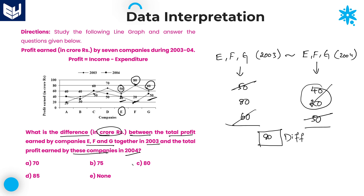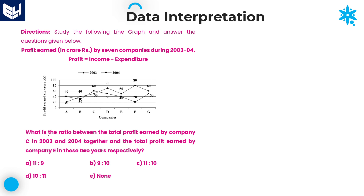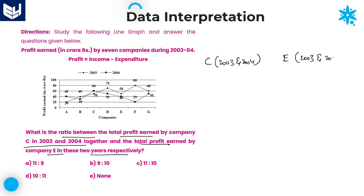Option C is the right answer for the second question. Now the third question: we need to calculate the ratio between the total profit earned by Company C in both 2003 and 2004 together, and the total profit earned by Company E in both 2003 and 2004 together. Company C in 2003 is 50.